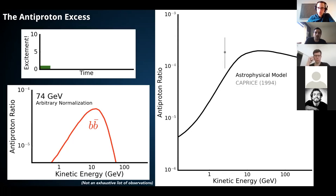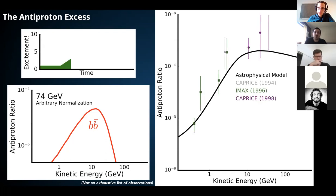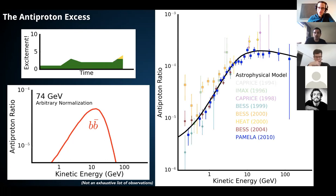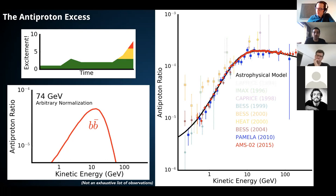Here's what the data looks like over time. Early data wasn't very exciting. Then data got more precise and looked very much like astrophysical contributions — not much excitement from a dark matter perspective. But then AMS data came on, and the astonishing precision of the AMS-02 dataset showed error bars much smaller than the data points themselves. That gives us extraordinary statistical precision to look for bumps or wiggles that might be due to a dark matter signal. The excitement is quite high.